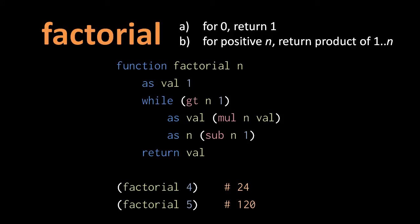And we multiply n times val, n is 3, val is 4, so that's 12, which we assign to val, and then we decrement n again.